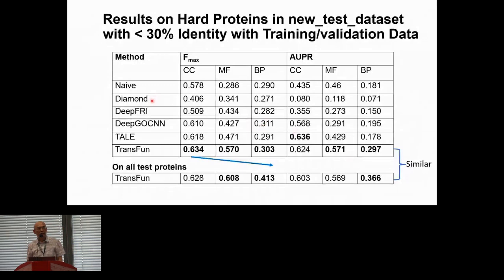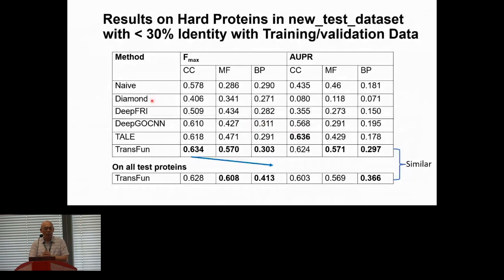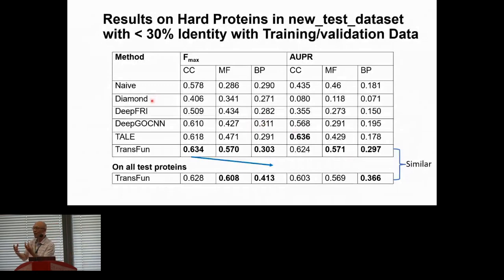Regarding another question about AlphaFold structure quality: we cannot guarantee AlphaFold gives a perfect prediction for every protein, but it generally gives good predictions for most proteins, which is sufficient signal to train a robust model. Deep learning is robust against noise — if there is a small error in the input, the model ignores the noise and uses the available signal. Additionally, we tested using experimental structures versus AlphaFold-based structures as input and obtained similar results, so you can confidently use AlphaFold-based structures.